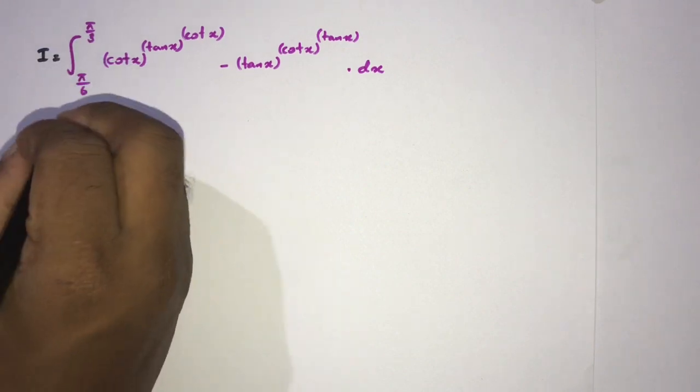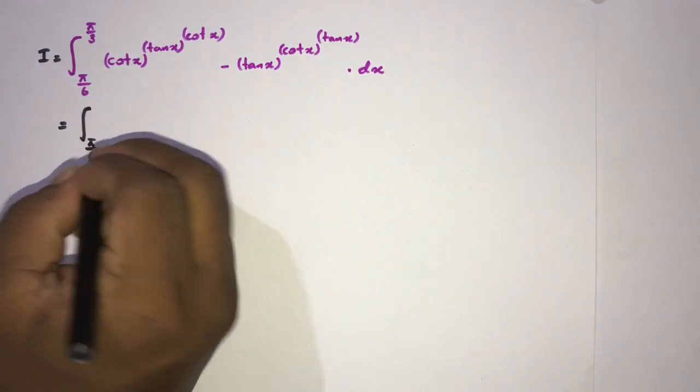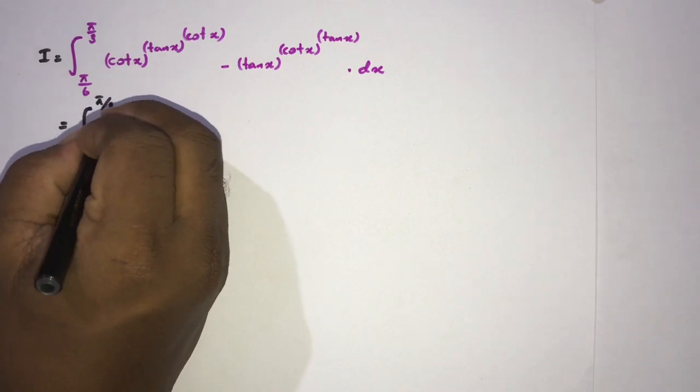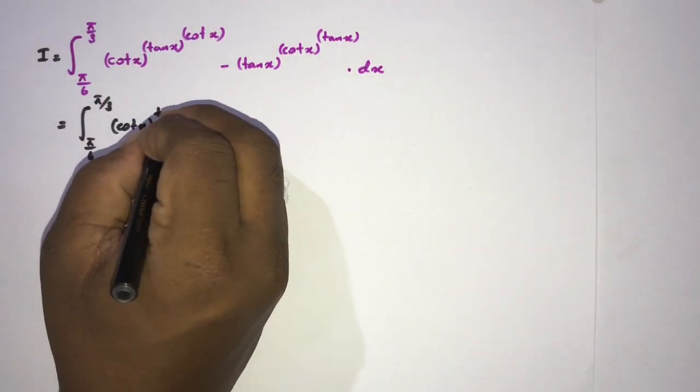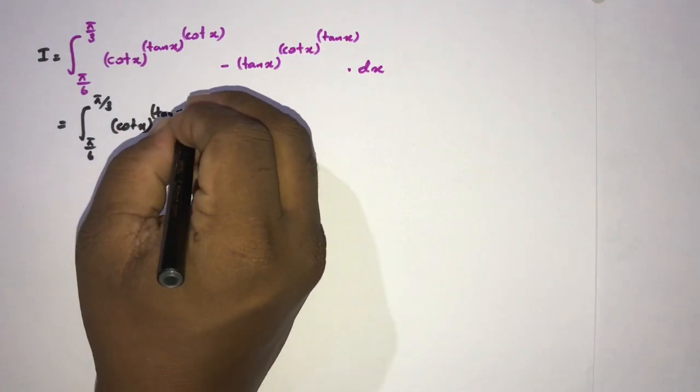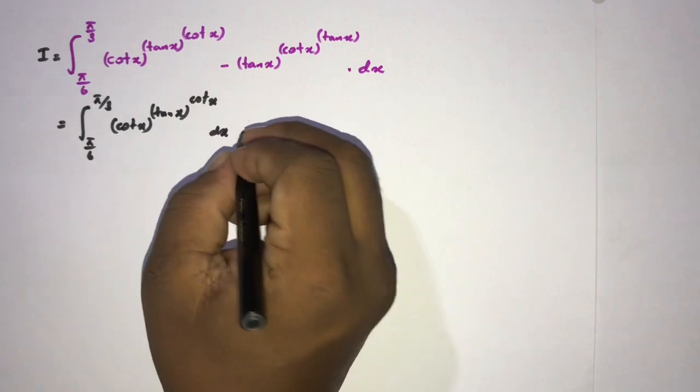And now we know we can split this integral into two different integrals: pi over 6 to pi over 3, cotangent of x raised to the tan of x raised to the cotangent of x dx, minus